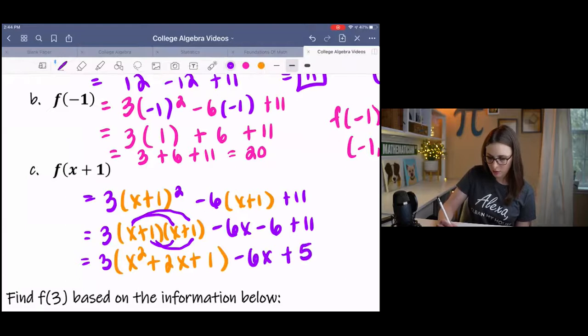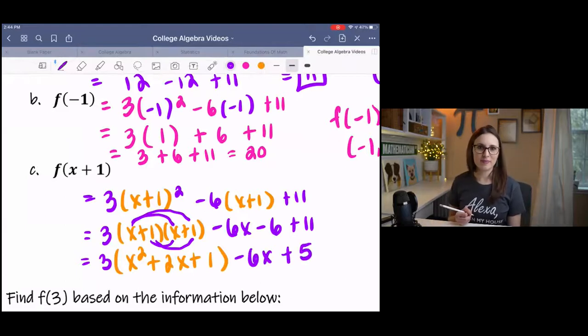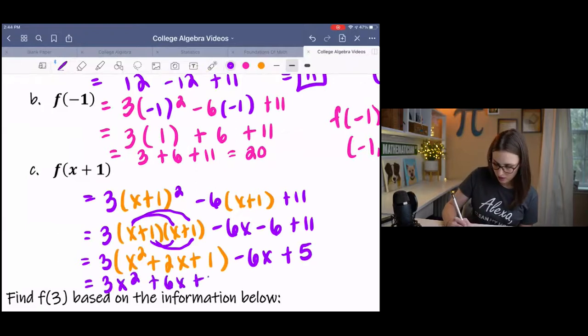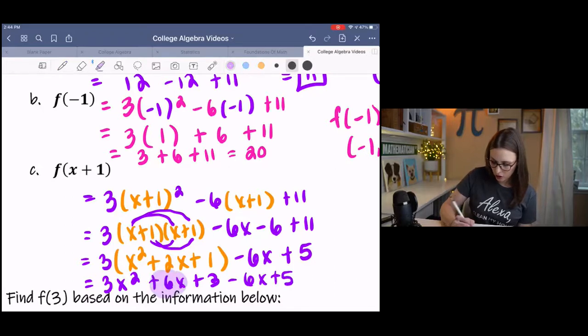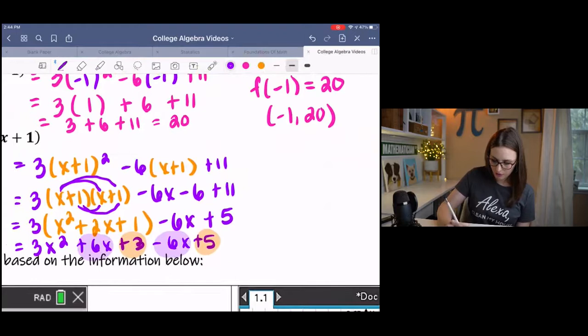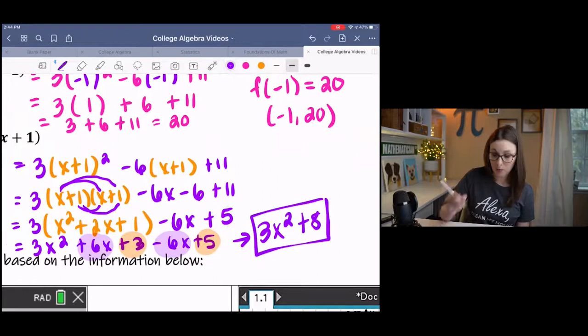I can simplify this a little bit. Then I can distribute the 3. Now at this point, all we can do is add like terms. Our 6x's add to 0. So we end up with 3x squared plus 8. So that's the correct answer.